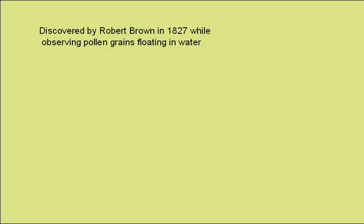Brownian motion. This gave evidence for the continual motion of particles in liquids and gases and helped lead to the kinetic theory of matter. It was discovered by Robert Brown in 1827, hence the name, and he was observing pollen grains floating in water. He noticed that the pollen grains were continually jiggling around.